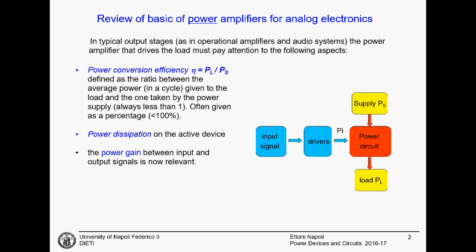When you come to power amplifiers, also studied in analog electronics, you start caring about the power that you want to transfer to the load. In this case, you start thinking about efficiency — the ratio between the power you can transfer to the load divided by the power you take from the power source, the energy you are using. This efficiency is often given as a percentage, from 0 to 100%, and will always be smaller than 100%.